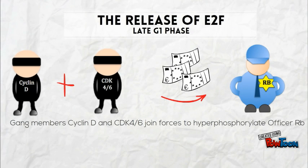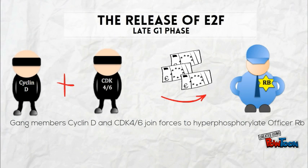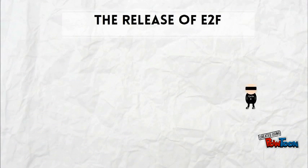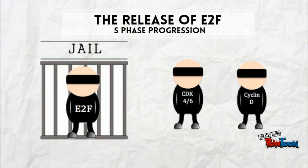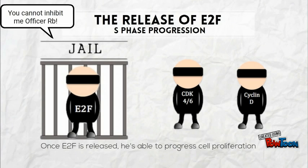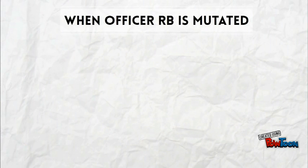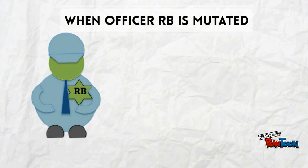This could also be seen as E2F's accomplices coming to the rescue and bribing officer RB to release their ringleader. Now free to get back to his usual antics, E2F causes proliferation by entering the nucleus and promoting transcription of proteins required for S phase progression. When officer RB is mutated, he is no longer able to bind E2F.